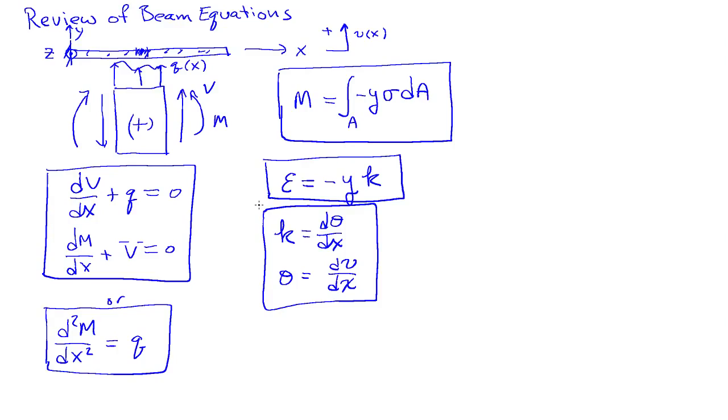So these are the main equations that govern the behavior of the beam. And if you want, you can also combine these two guys up here, the two kinematic relationships. And you can say kappa is equal to the second derivative of the deflection field. So just substituting one into the other. So these are the primary equations.